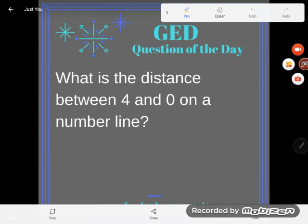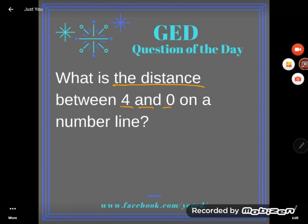So let's take a look. It says, what is the distance, so I'm looking for a distance, between 4 and 0 on a number line? The distance between 4 and 0 on a number line, how far is 0 from 4?